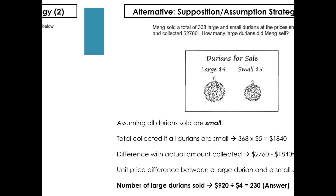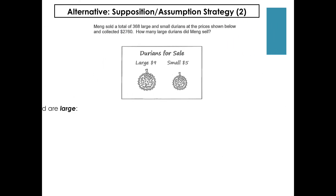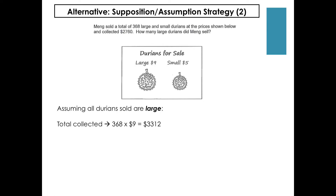I can also assume that all durians sold are large and get the same answer — the only difference is that I will need one additional step at the end. If I assume all durians are large, since each large durian is $9, then 368 times $9 gives $3,312, which is obviously different from $2,760, the actual amount collected. The reason for this difference is that there are also small durians being sold.